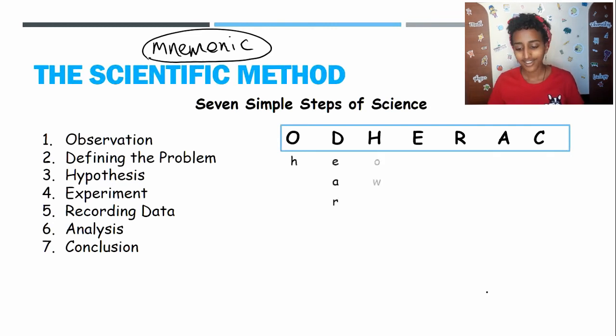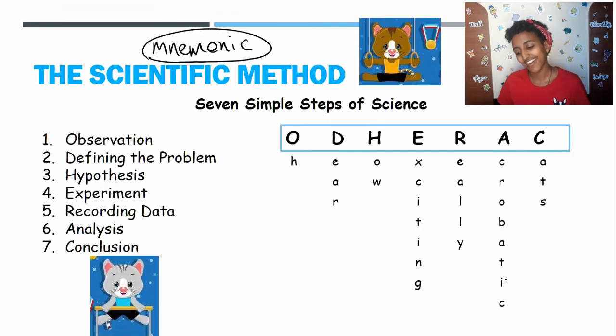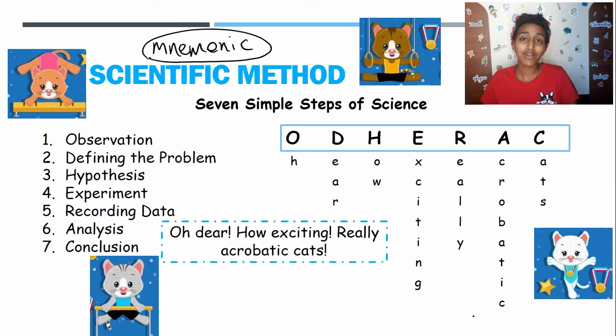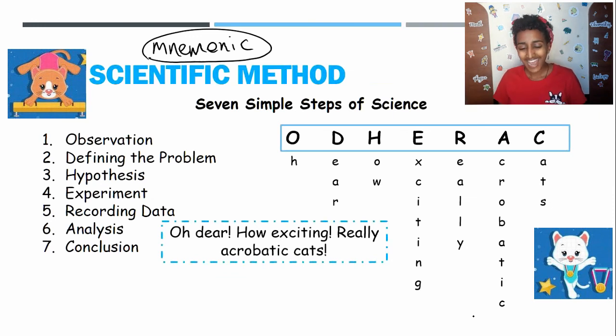For example, Oh dear, how exciting, really acrobatic cats. Alright, that's not a very good example. That's not a very good mnemonic. But you can memorize it as O-D-H-E-R-A-C or you can memorize it as Oh dear, how exciting, really acrobatic cats.